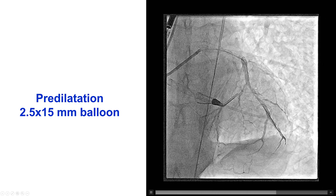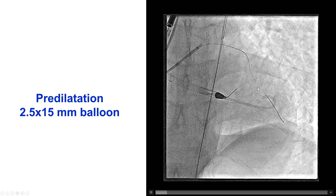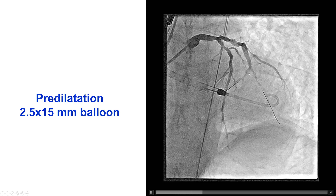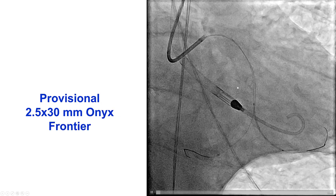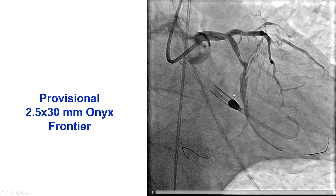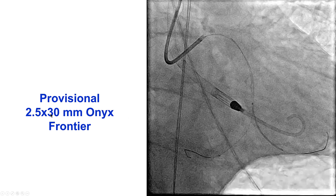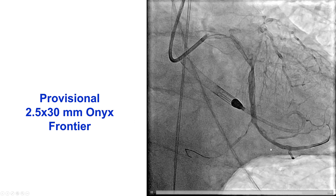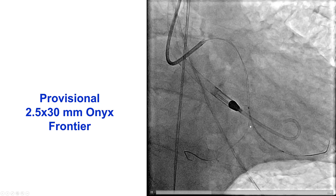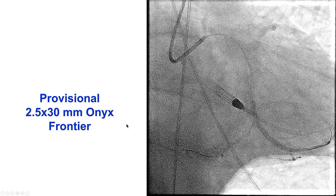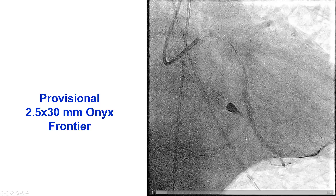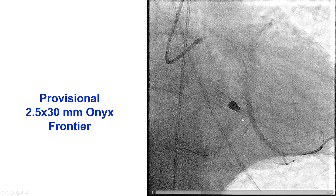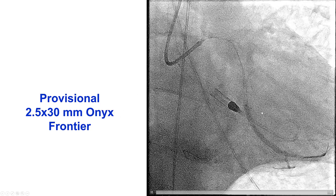This is from the cranial view, showing thrombus in the proximal segment of the second obtuse marginal, as well as some disease in the proximal circumflex. We decided to use the provisional approach, placing a 2.5 by 30 mm Onyx Frontier stent from the second obtuse marginal to the mid-circumflex, jailing the circumflex. Given the patient's poor hemodynamics and emergency situation, we decided to proceed with an attempt for provisional stenting.